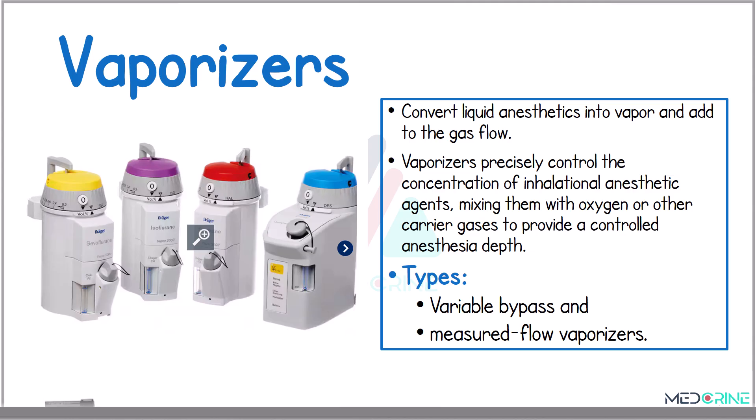Vaporizers convert liquid anesthetic agents, or volatile agents, into vapor and then add them to the gas flow. These vaporizers are designed to deliver a controlled concentration of anesthetic vapor mixed with oxygen or any other carrier gas. The types of vaporizers include a variable bypass vaporizer and a measured flow vaporizer, and for each of the inhaled anesthetic agents, the respective vaporizers are color-coded depending on the anesthesia.